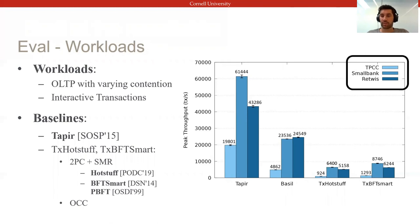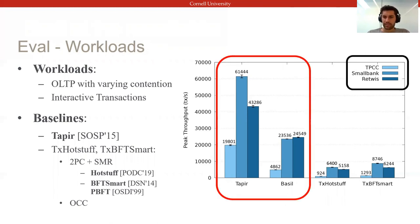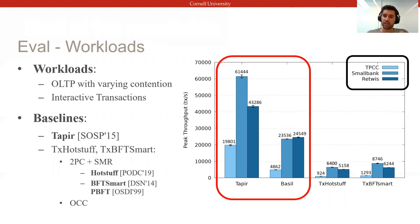On the left, we compare Basel to Taper, a recent state-of-the-art crash-failure database that uses a similar client-driven approach and also integrates distributed commit and replication. Basel's main overhead stems from requiring signatures and larger quorums to be Byzantine-fault-tolerant, but nonetheless it offers quite competitive performance given the increased security.